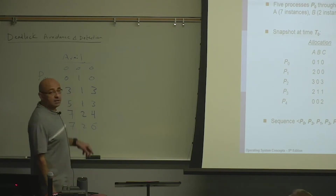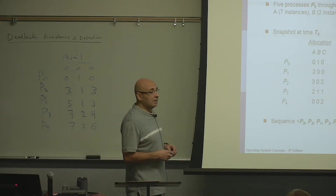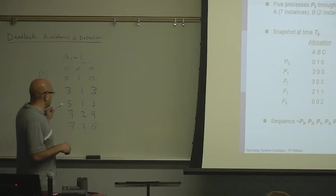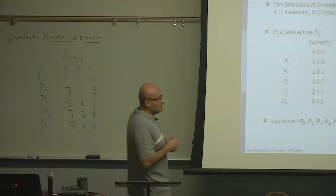Is the safe sequence unique? No, it's not unique. You could have started with P2 instead of P0. So we know that at least we have two safe sequences, but there may be more — if in step one you have two options, in step two you may have multiple options as well. One safe sequence is sufficient to say that we don't have a deadlock.